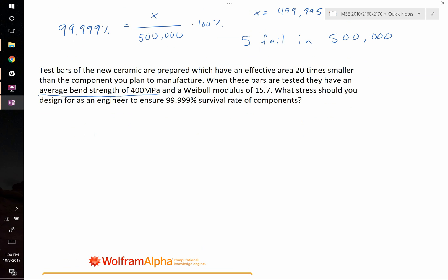The question asks what stress should you design for as an engineer to ensure 99.999% survival rate of components? When we use the Weibull equation, the Weibull equation is written as follows: natural log of the natural log of 1 over the quantity of 1 minus F is equal to M, the Weibull modulus times the natural log of the stress at which something fails, minus M, the Weibull modulus times the natural log of our characteristic stress.